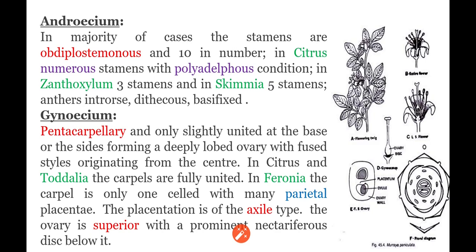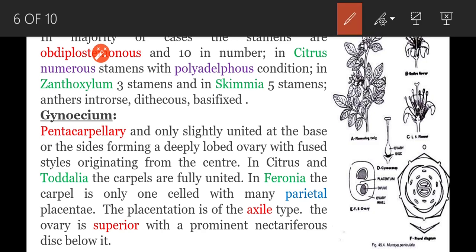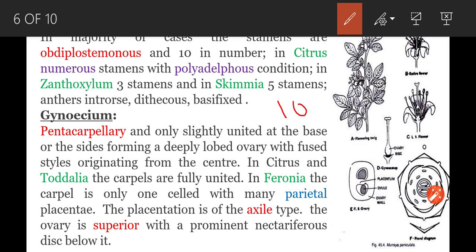The third whorl of the flower is androecium. Androecium generally comprises 10 stamens arranged in two whorls or two rings; such a condition is called obdiplostemonous. In the floral chart, the inner ring of stamens is opposite to the sepals — they are antisepalous — and the outer ring is opposite to the petals — they are antipetalous.